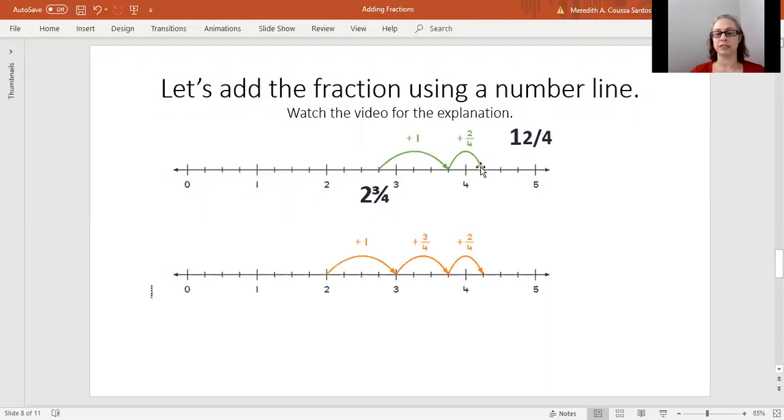So that brings us to four and one-fourth or four and a quarter. So two and three-fourths plus one and two-fourths is four and one-fourth.